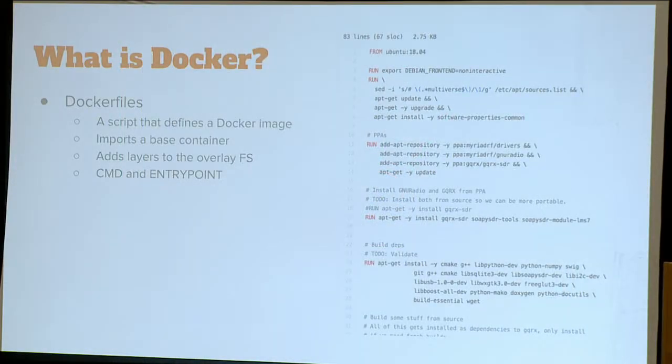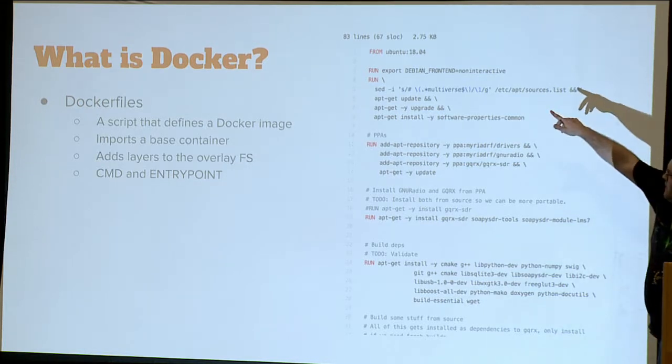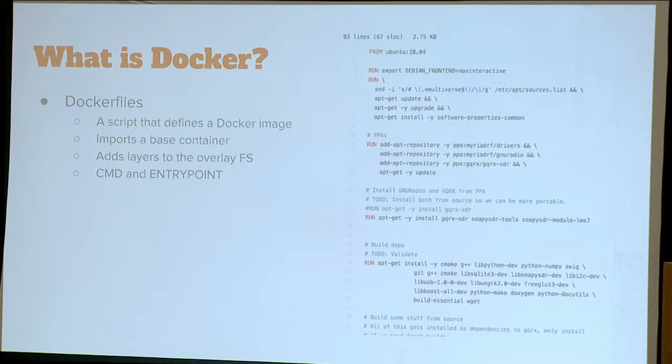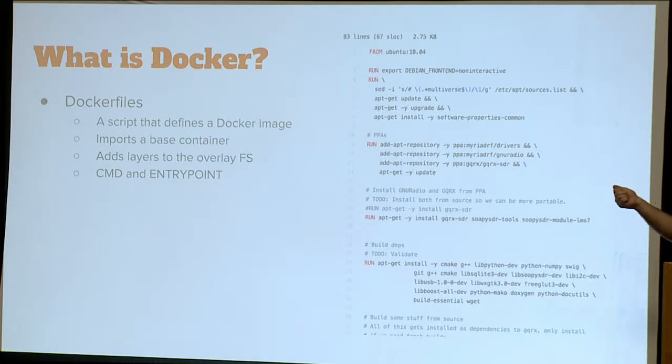Let's talk about Dockerfiles. This is an example of a Dockerfile I wrote for some SDR stuff. The important things to note are the FROM — that is the base container we are importing. We import that image and then build on top of it. It's basically a script, very similar to config management scripts or a bash script to bootstrap a system. Down below we have CMD and ENTRYPOINT. ENTRYPOINT is a binary or program that Docker runs when the container starts. CMD is a default argument — the first argument passed to the container when you run it. If you have a container for a service, people will put in CMD the instantiation of their service, and you just do Docker run container and it knows what to run.